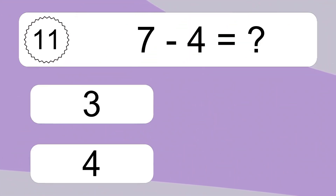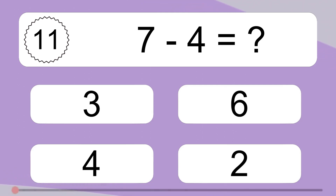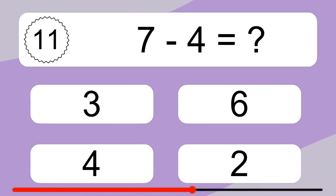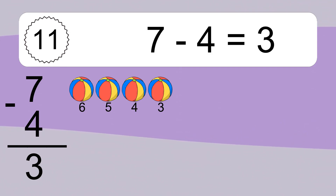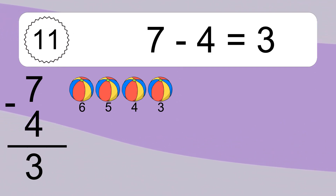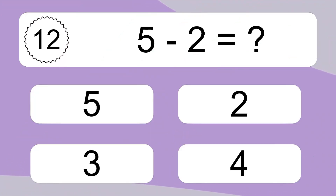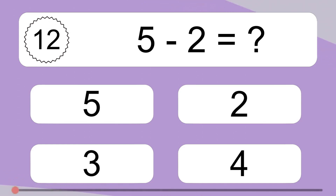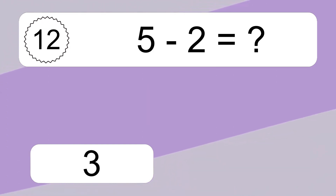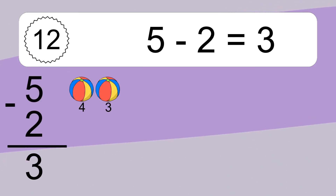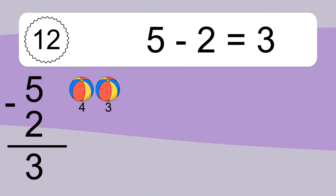7 minus 4 equals what? 7 minus 4 equals 3. Let's count it: 6, 5, 4, 3. 5 minus 2 equals what? 5 minus 2 equals 3. Let's count it: 4, 3.